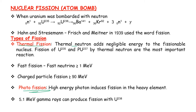First is thermal fission — the neutron adds negligible energy to the fissionable nucleus. Fission occurs in Uranium-235 and Plutonium-237 by thermal neutrons. Thermal neutrons are the most important for these reactions. Thermal fission applies to Uranium-235 and Plutonium-237.